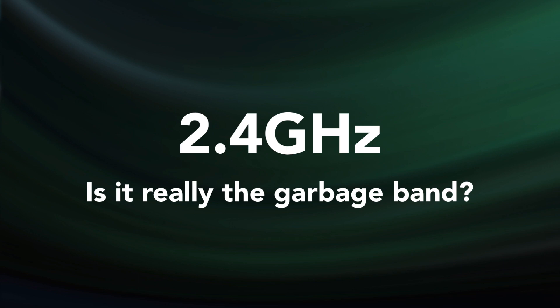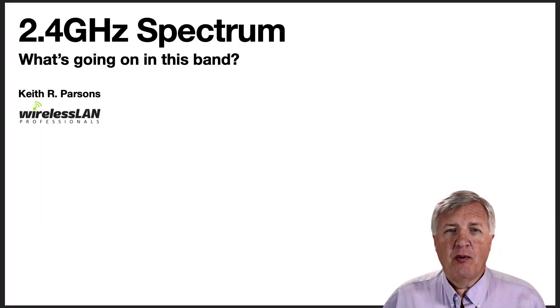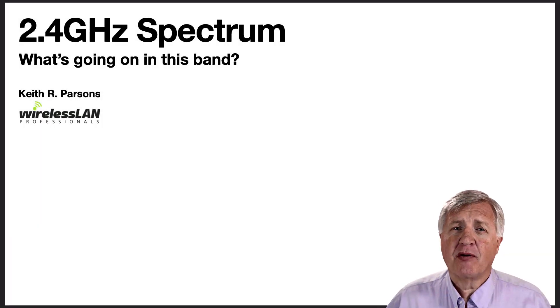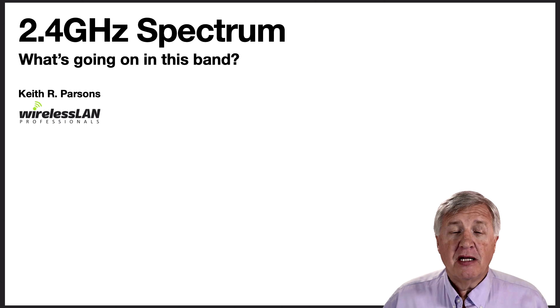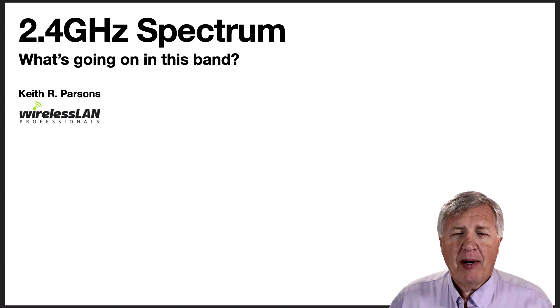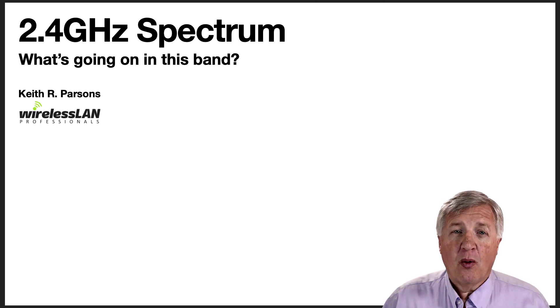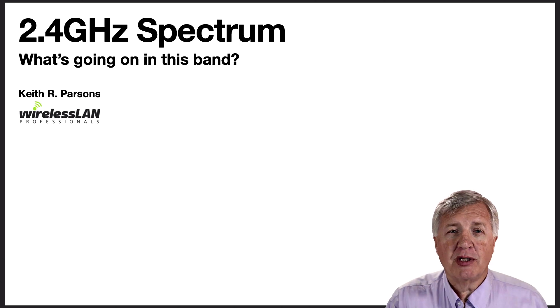This is the spectrum that's been around for a couple of decades now. For a long time, it was called the garbage band. I don't know if we want to consider it the garbage band today, but it's been around a long time and done a lot of things. Today we're going to talk about what's going on, what are some of the wireless networking protocols we're using in this band.